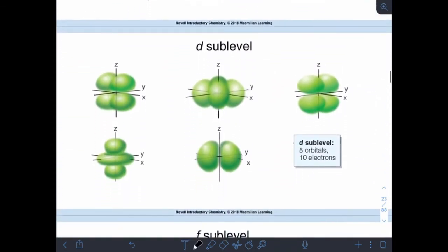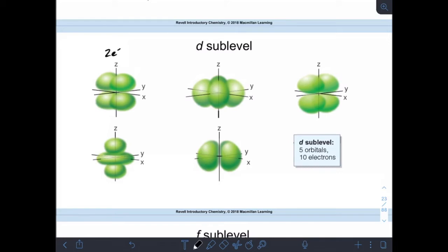Things get even weirder with the d sub-level - all kinds of crazy shapes. But again, two electrons per orbital maximum. I've got five orbitals, each orbital can hold two electrons, so if my d section is full, the maximum I can have is 10 electrons.